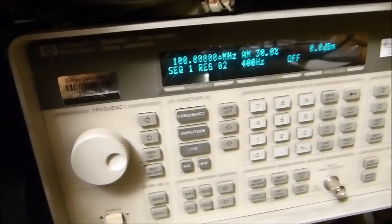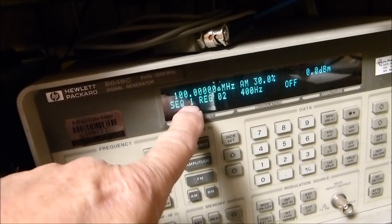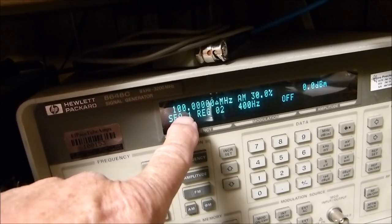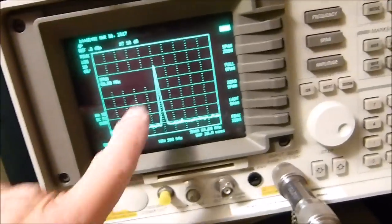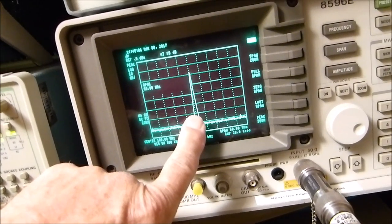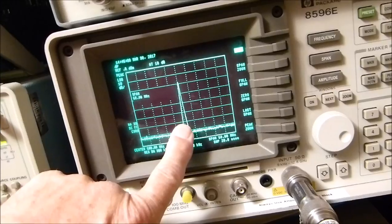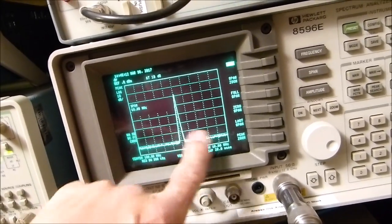I've got it set for 100 megahertz. We'll do the 88 to 108 one first, set it for 100 megahertz, and we're going to vary that of course. The spectrum analyzer I've got set for 100 megahertz mid frequency with a 60 megahertz bandwidth, so we can watch 30 megahertz on each side.